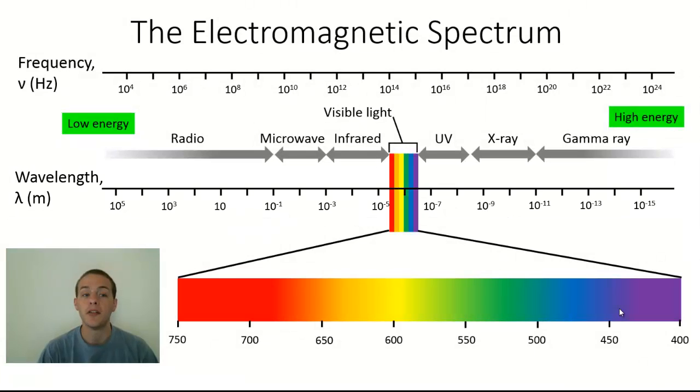Notice that the left hand side of the electromagnetic spectrum shows the low frequency, high wavelength light, and the right side shows the high frequency, low wavelength light.